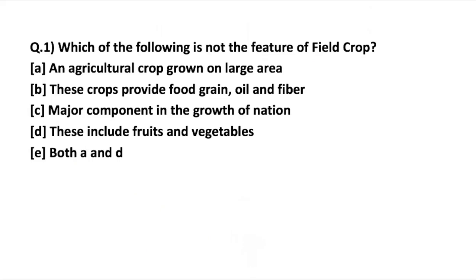Let's begin with the first question: which of the following is NOT a feature of a field crop? The first statement is 'an agricultural crop grown on a large area.' The very basic requirement for a crop to be a field crop is that it should be used for agricultural purposes and grown on a large area — so this statement is absolutely correct.